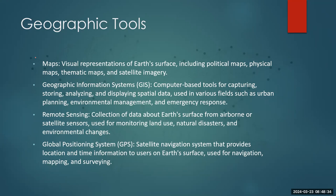Remote sensing is the collection of data about the Earth's surface from airborne or satellite sensors. These are really cool to show your students because you can actually pull up satellite footage showing what the Earth looks like when a tornado hit or when the environment changes. Being able to have that big overview gives students a deeper learning and deeper appreciation of the geography around them. Global Positioning System, or GPS, is the satellite navigation system that provides location and time information to users on the Earth's surface, helping us to get around.